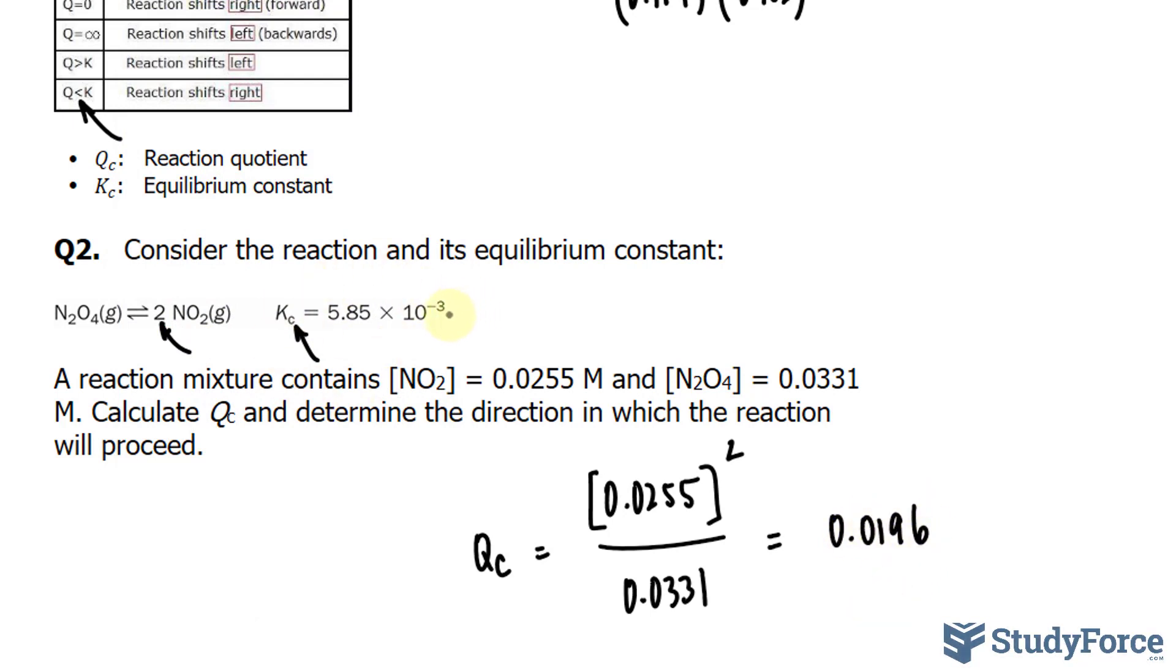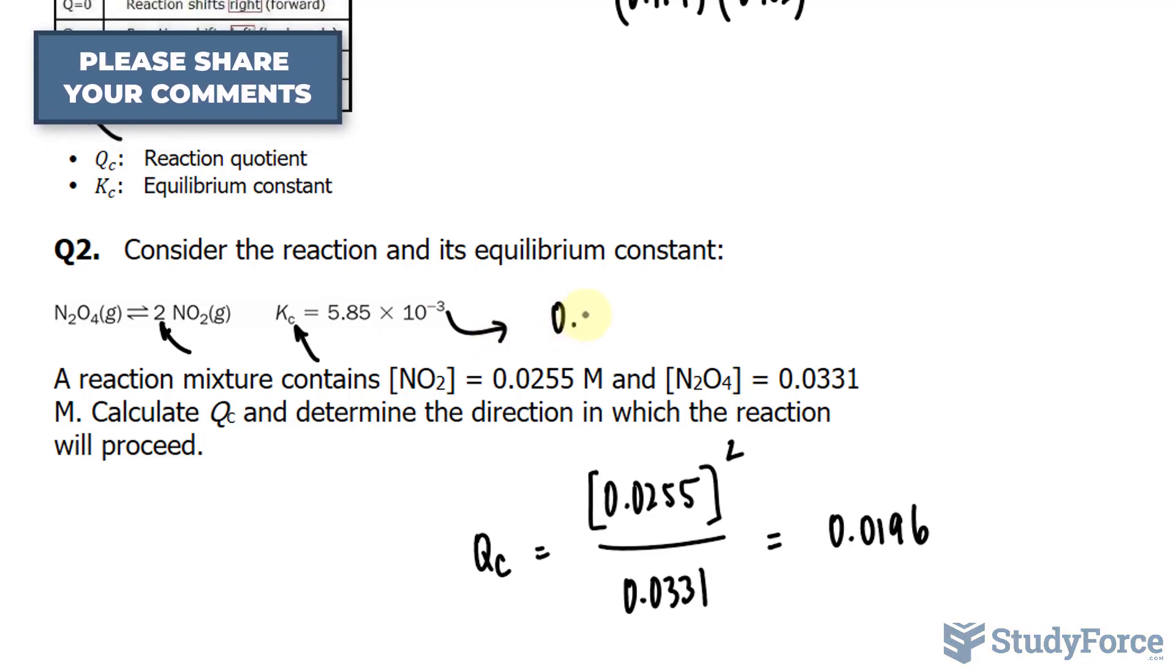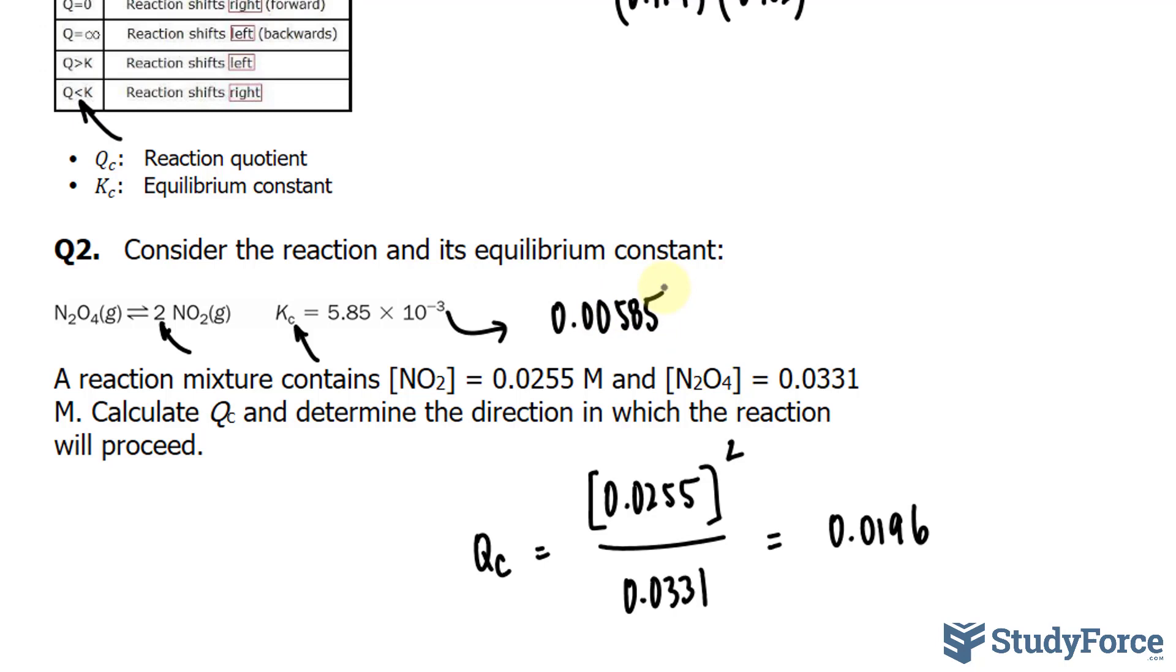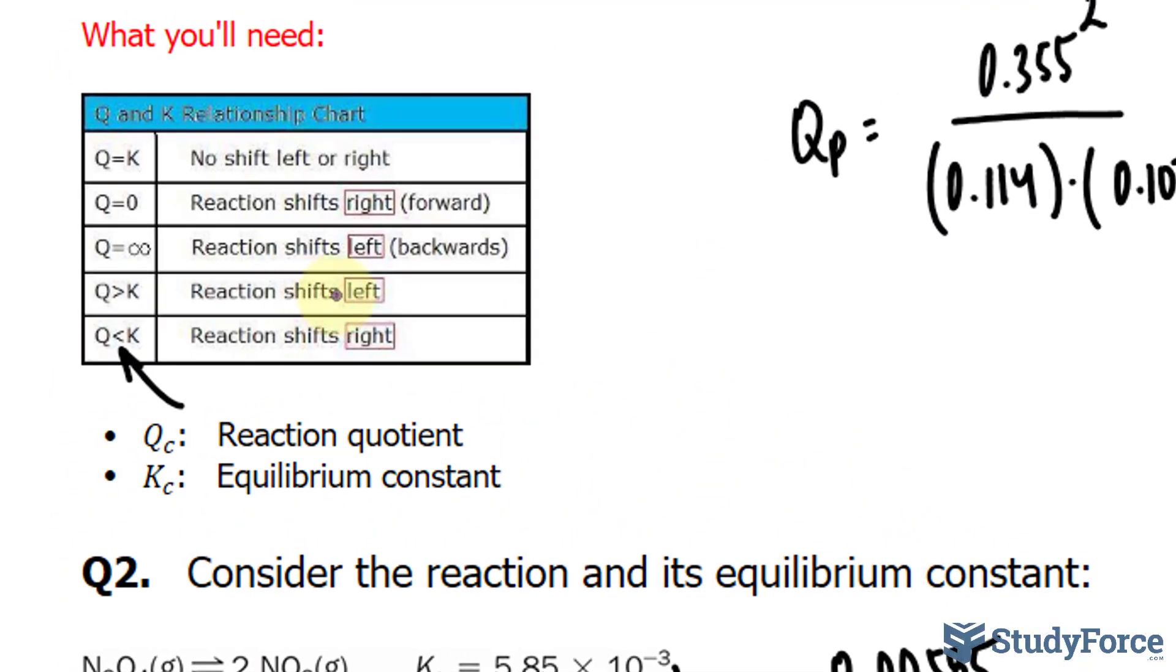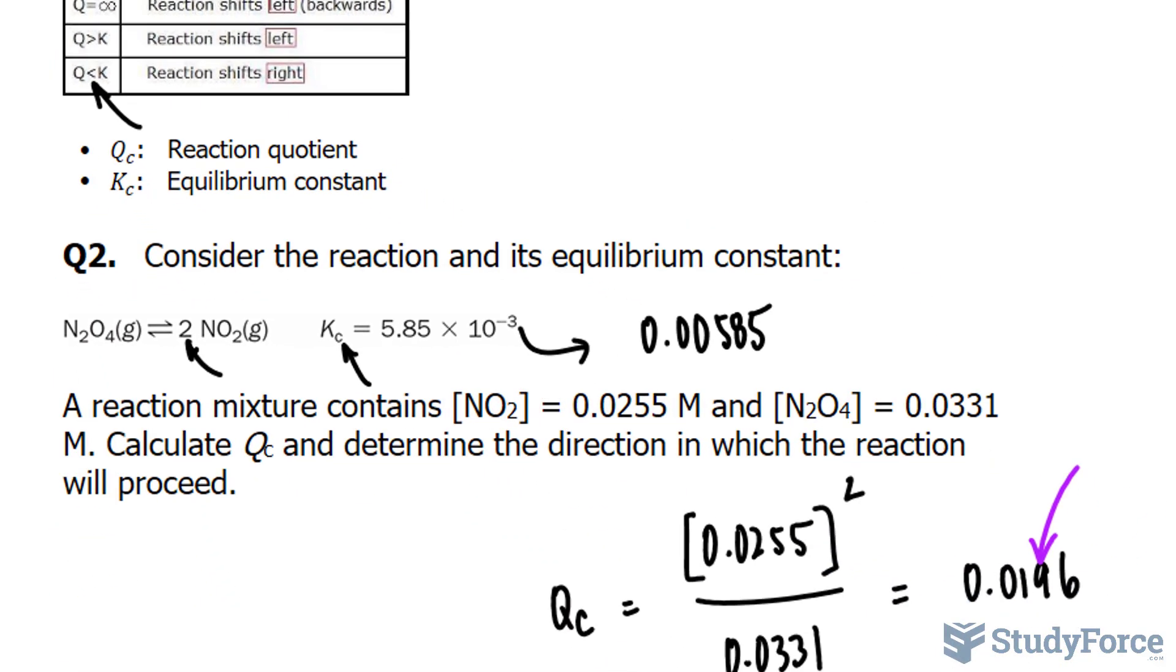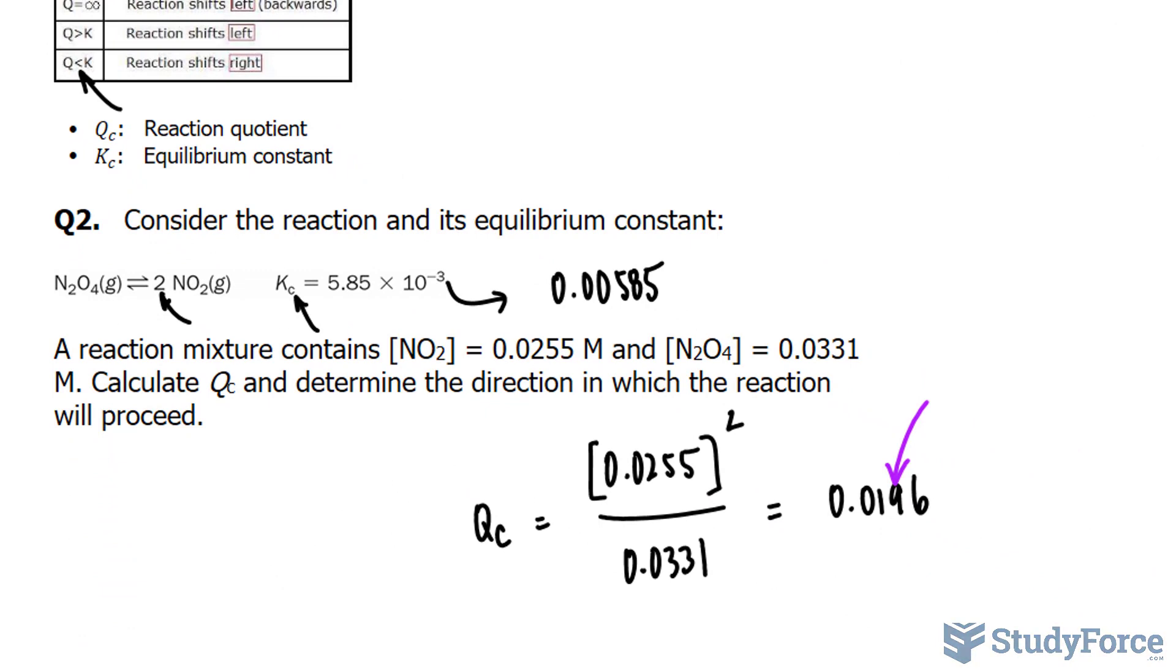If we write this out in decimal form, this number, we should get 0.00585. As you can see, this number is larger than that number, and when Q is larger than K, the reaction shifts to the left. So we can assume that the direction it will be moving is to the left.